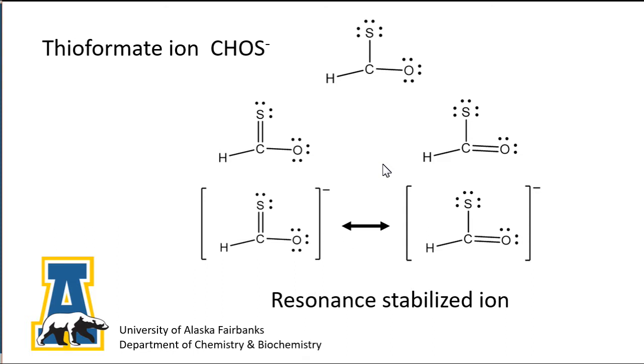When you end up with two or more Lewis formulas that both satisfy the octet rule but have double bonds and lone pairs on different atoms, the ion or molecule is a resonance hybrid.